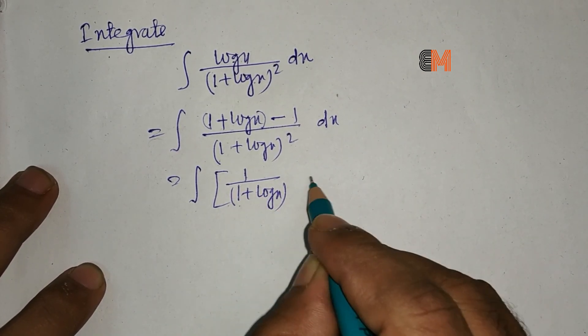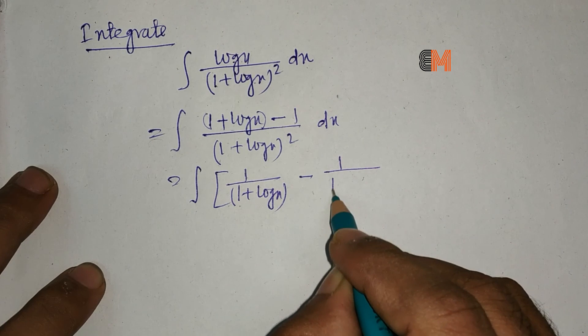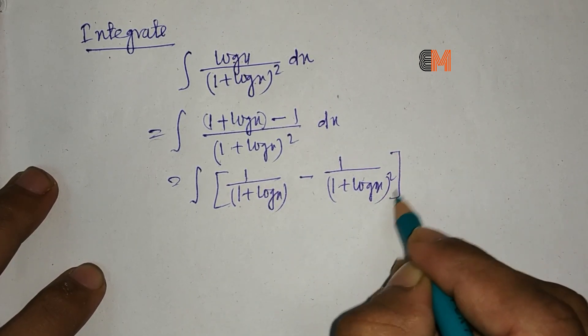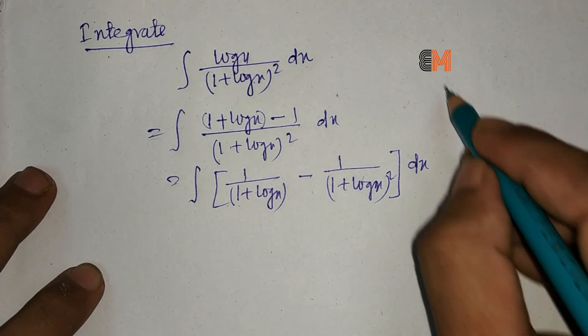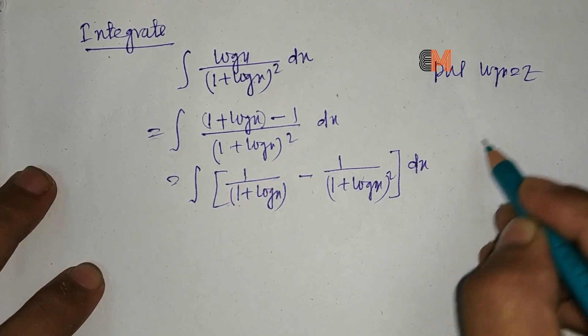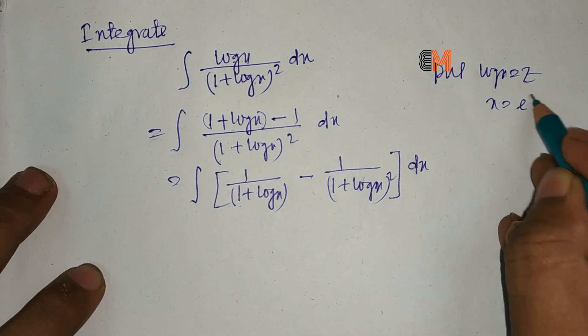minus 1 divided by (1 + log x) whole squared dx. Now put log x equal to z, that means x equals e to the power z.